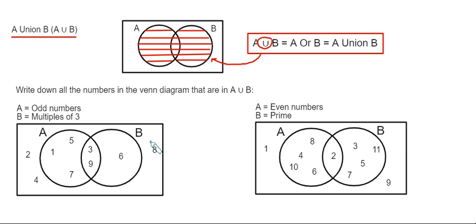So I've got to write down all the numbers in the Venn diagram that are in A or B. So set A we have the odd numbers and set B we have the multiples of 3. So the numbers that we're looking at here are all these numbers here. So make sure you include the ones that are in the center of the Venn diagram as well.